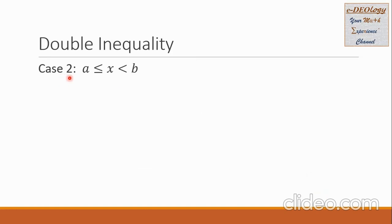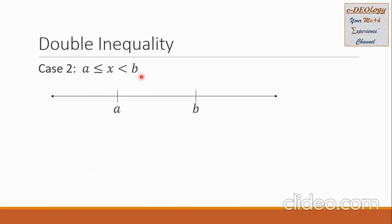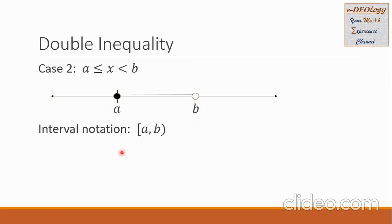Case 2: a is less than or equal to x and x is less than b. On the number line, we put the numbers a and b, making sure that a is on the left side as the lower number and the bigger number is on the right. Then we connect the two numbers. Since a is part of the solution, we put a solid dot on a. For b, which is not part of the solution set, we put a hole. For the interval notation, we write a and b again. For a, we use a square bracket because a is part of the solution. For b, we use parentheses, meaning b is not part of the solution.